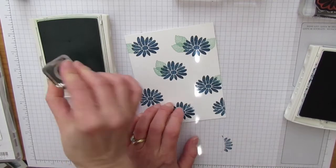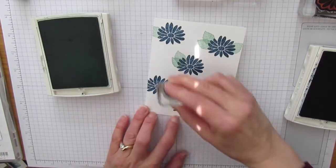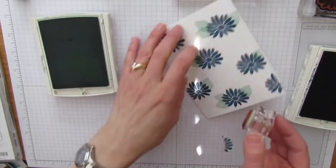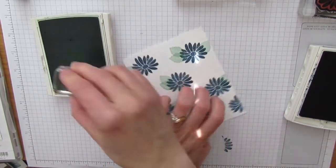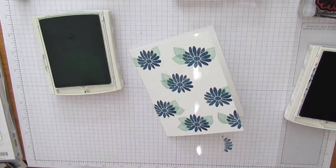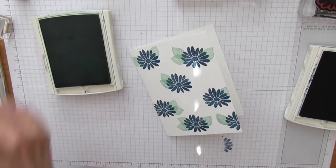We'll give it another leaf. I keep calling it flower, it's a leaf. Give it one here. I think I like that. If I don't you can just go in and add more flowers.